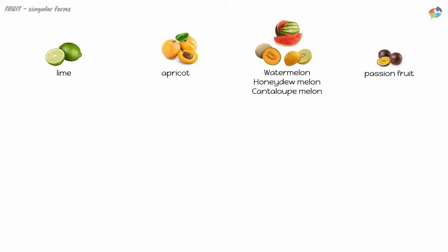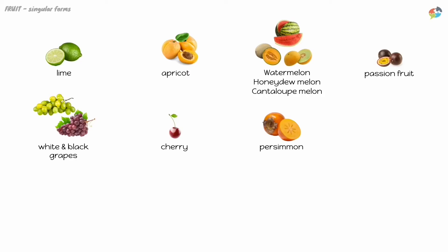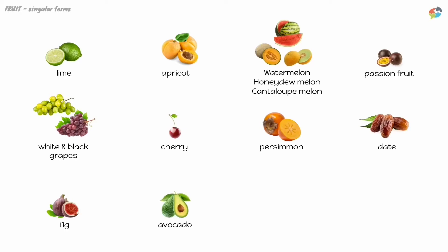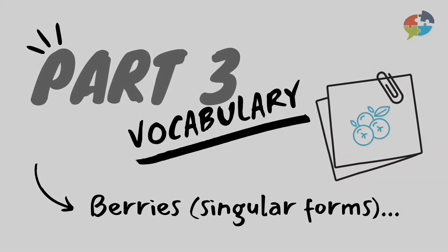Let's revise these again: lime, apricot, watermelon, honeydew melon and cantaloupe melon, passion fruit, white and black grapes, cherry, persimmon, date, fig, avocado, pumpkin, olives. Well done. Were you surprised that avocado, pumpkin, or olives are fruits? Let us know in the comments.